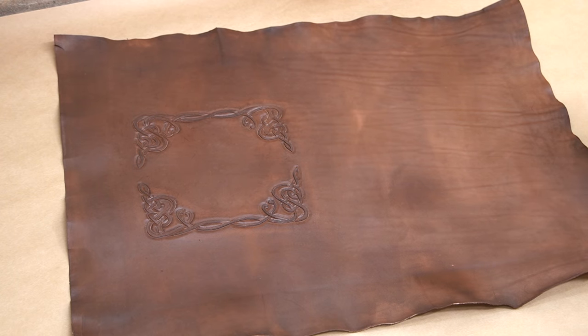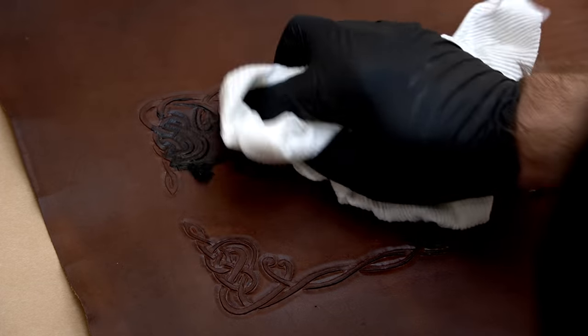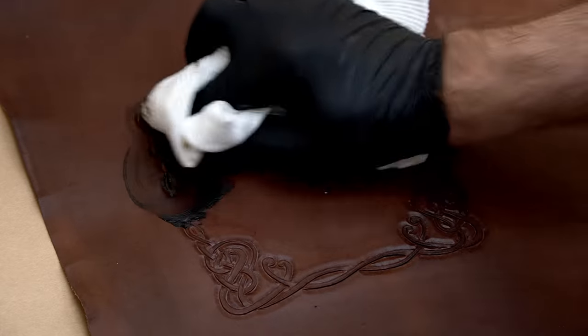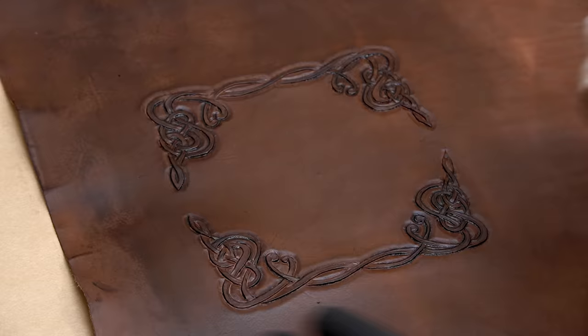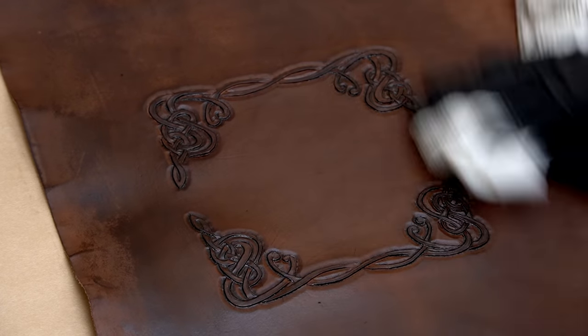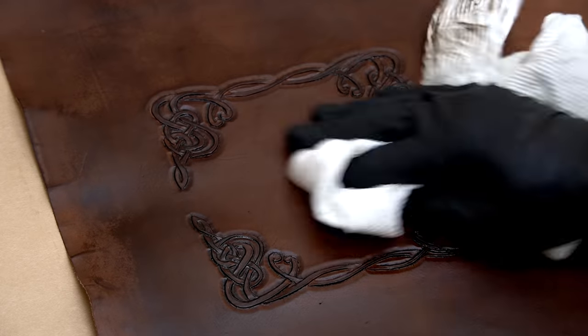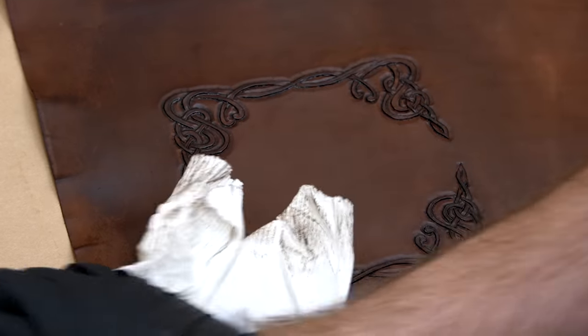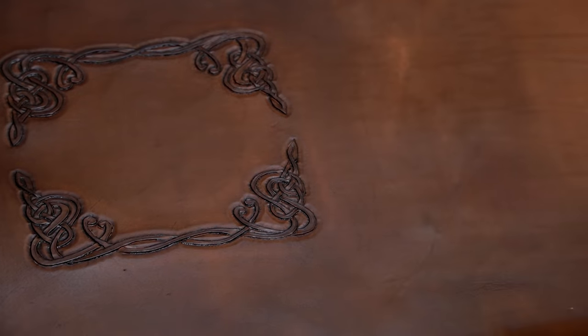So now we're just going to dye all of our pieces and then apply a resist. Now the resist is there, just like a finish, in fact they're the same material, to allow us to put an antique gel on our leather, and it'll help make everything pop a little more. It'll get down into all the cracks, and just give it a little more depth.